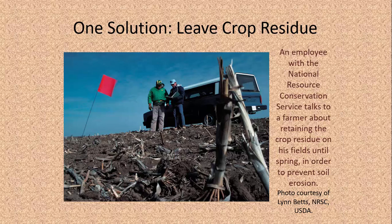There are a number of solutions we can implement to conserve our soils and maintain proper soil health. One example is to leave crop residues in the soil so that they can stabilize the soil structure. In this picture you see the roots and the bottoms of the stalks of corn. The bottom part of the corn is being left in the soil after harvest over the winter, and this allows the roots to maintain the soil in place until more corn, soybeans, or some other crop is planted in the next spring.